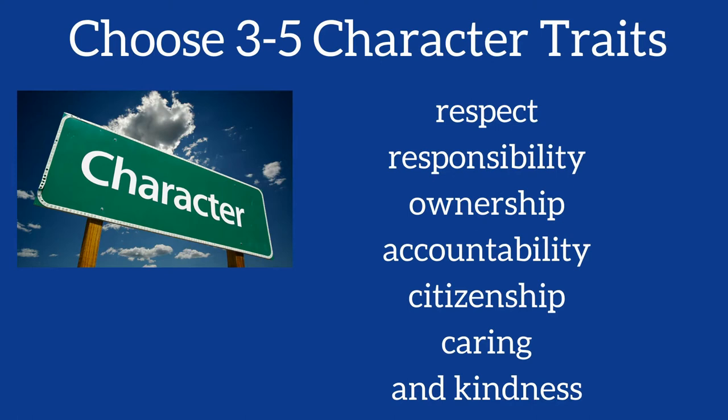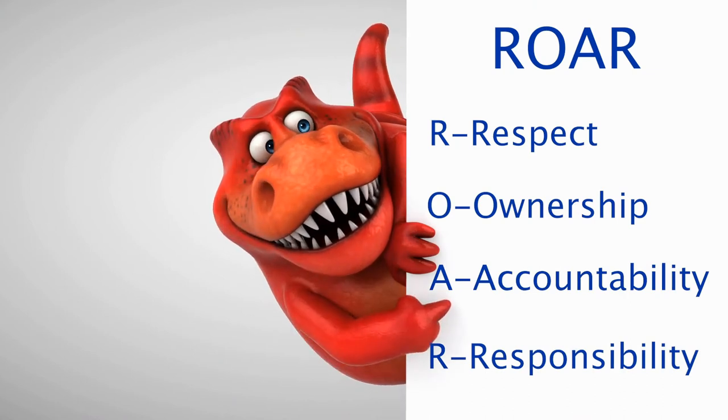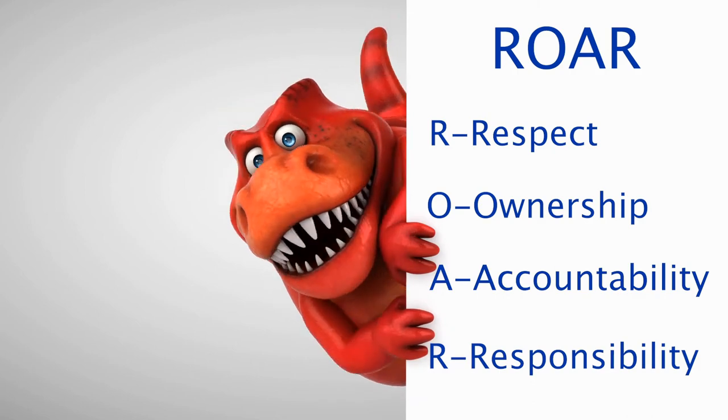To make these character traits really stand out and become part of your school, you may want to connect these traits to a catchy acronym, a school mascot, motto, or symbol as a way to build that sense of community. You might even pick a song, create a jingle, or a catchy tune to go along with it. Examples include ROAR — Respect, Ownership, Accountability, and Responsibility — or EPIC — Engaged, Personal Responsibility, Integrity, Considerate.